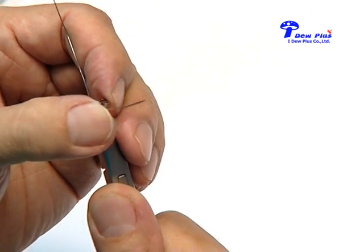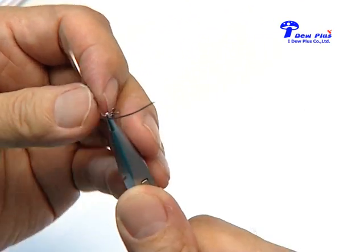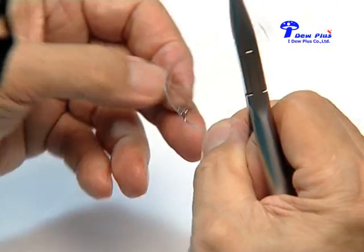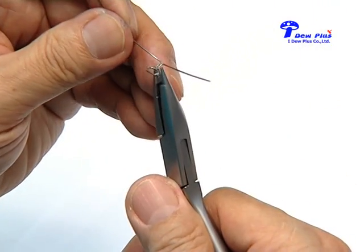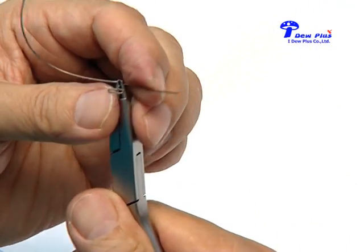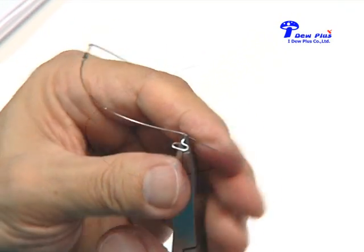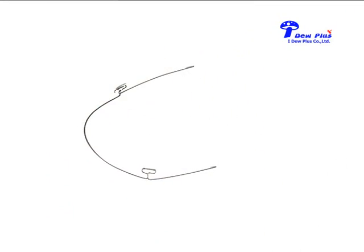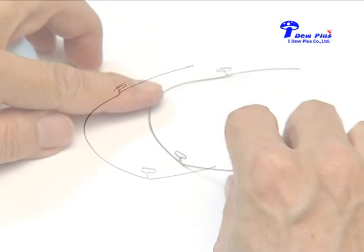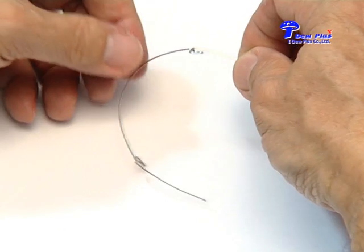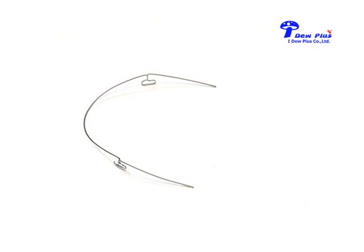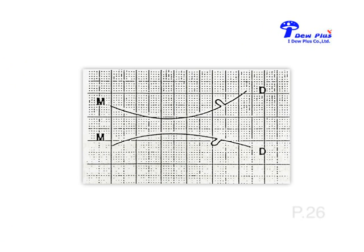In a clinical situation, we would like to have a compensatory bend called the gable. This is the gable band. In the mouth, it will lie like this. The gable band can be seen on page 26.